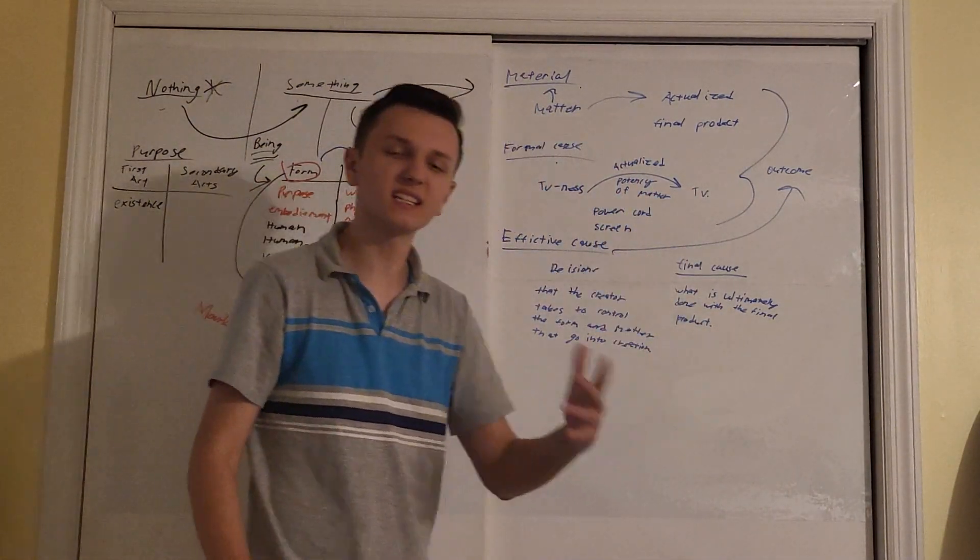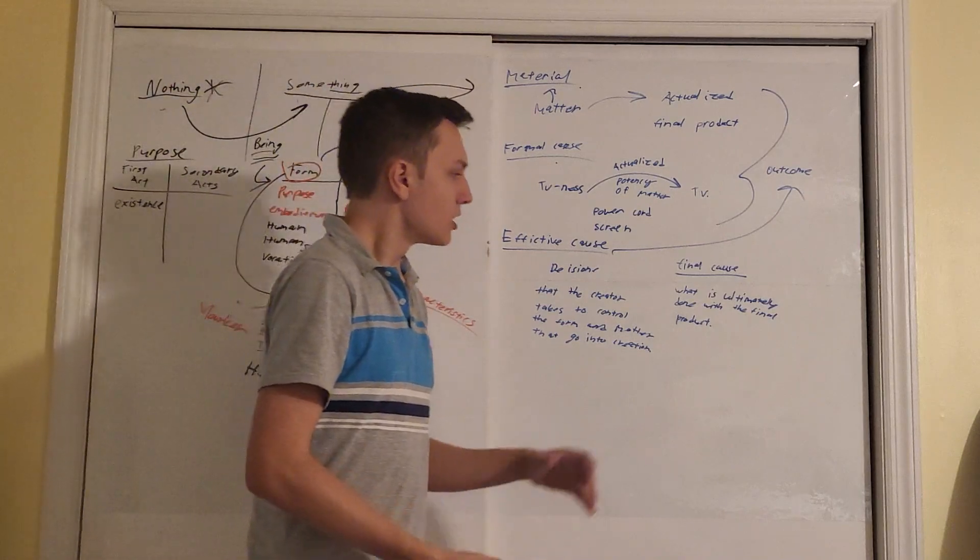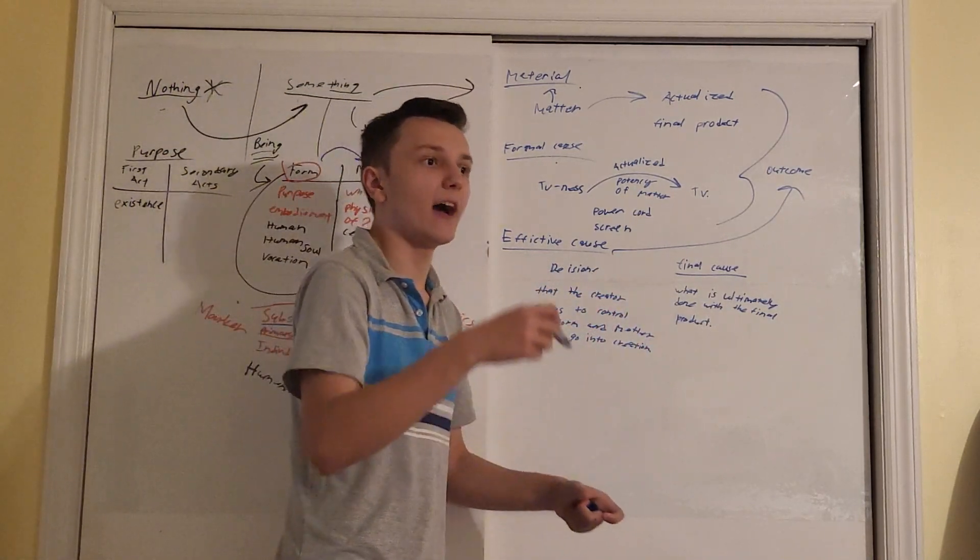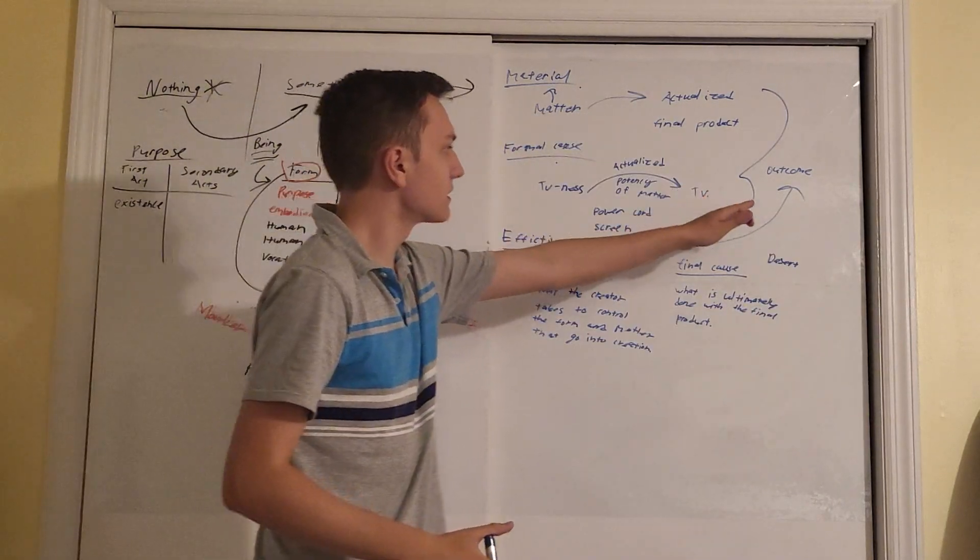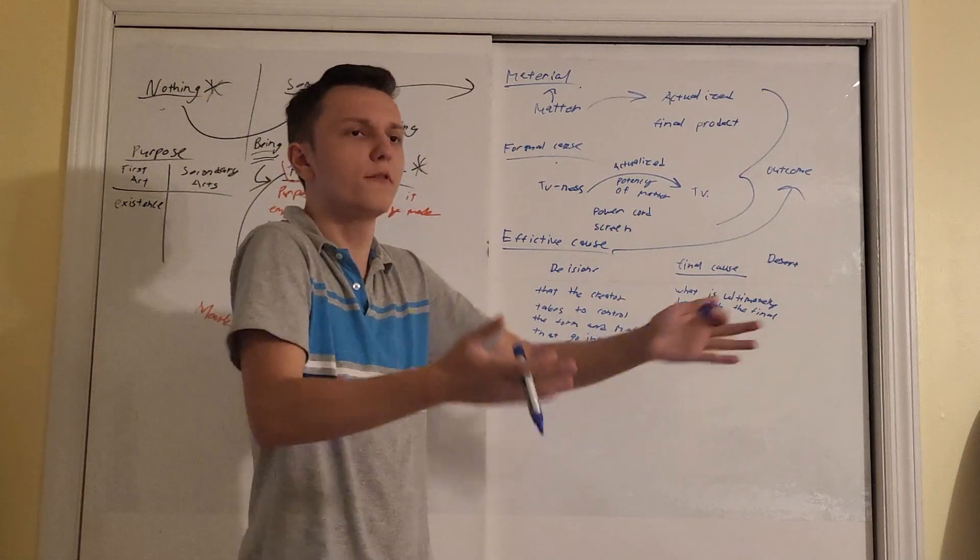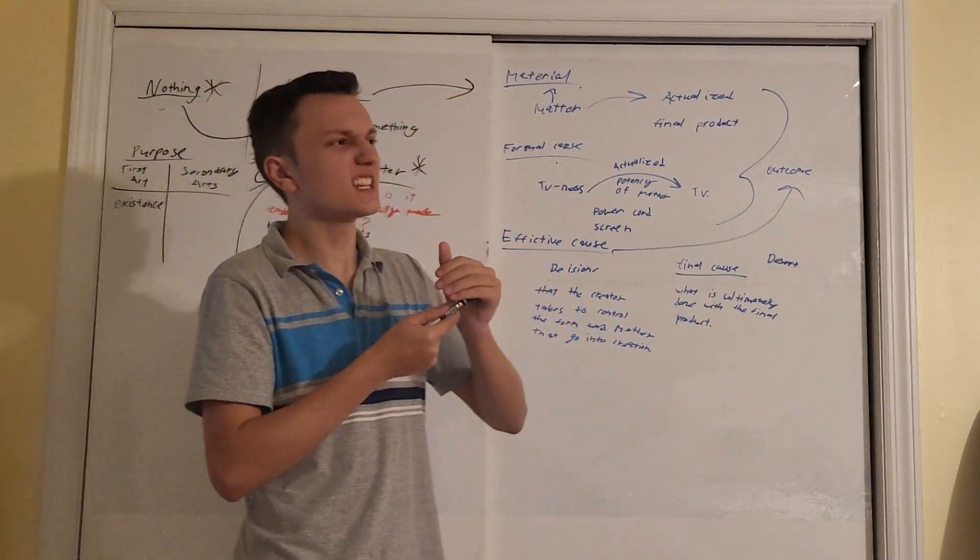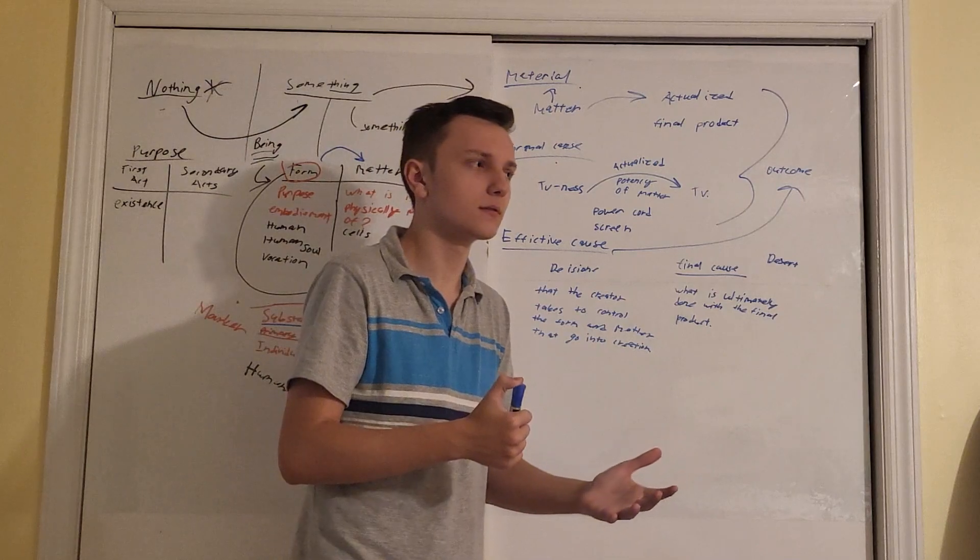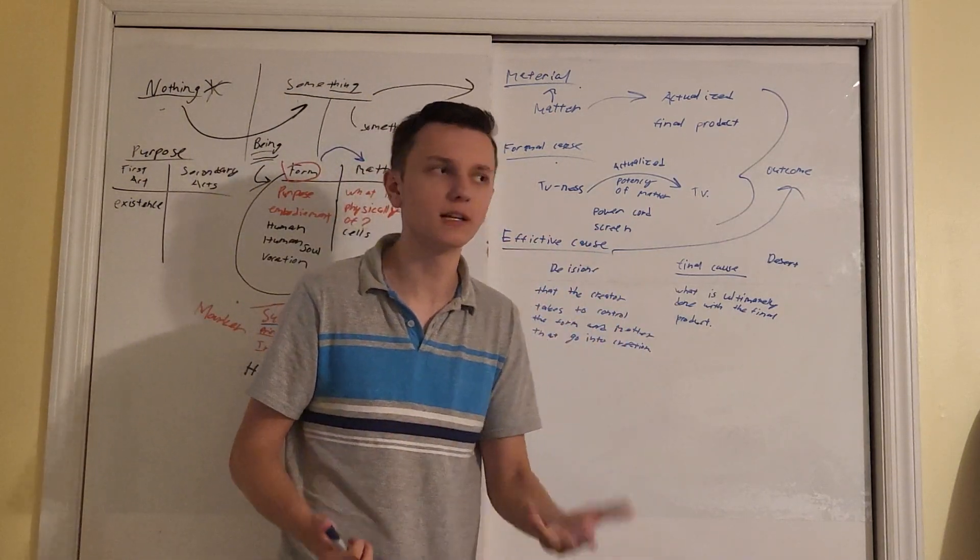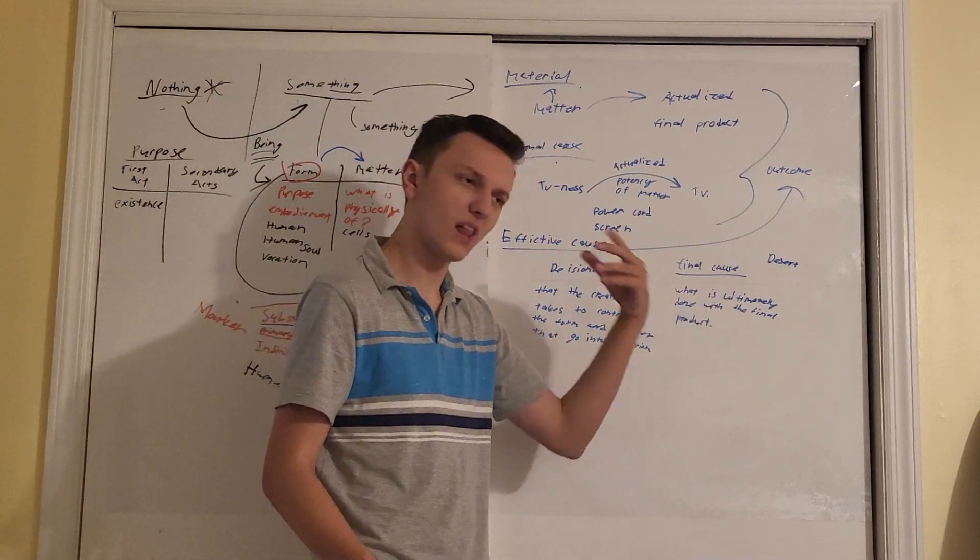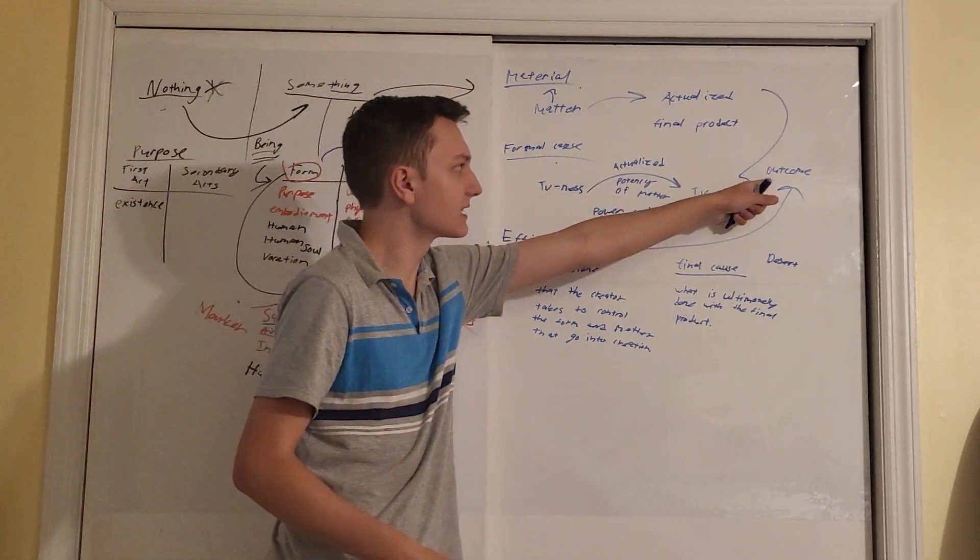Final cause is what is ultimately done with the final product of the cake. Accidental form. Some families might decide to eat the cake after dinner. Then the final cause would be the cake is used as dessert. Because the secondary matter of cake is just food. It is up to the final cause to decide what that food really means. Is it a dessert? Is it something to have in the middle of the day? Is it something that you let go stale and use to prop your door open? These are all accidental forms that actualize the secondary matter of cake.